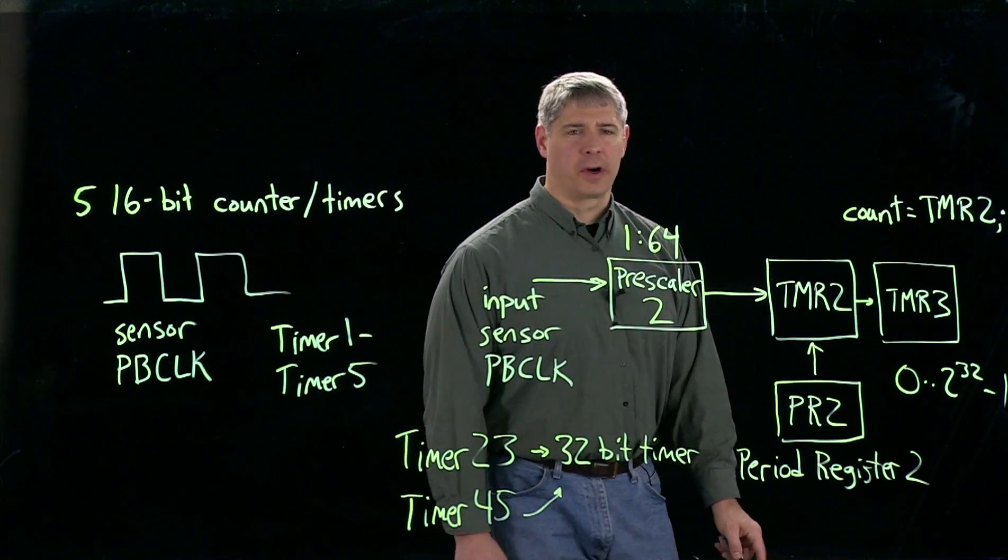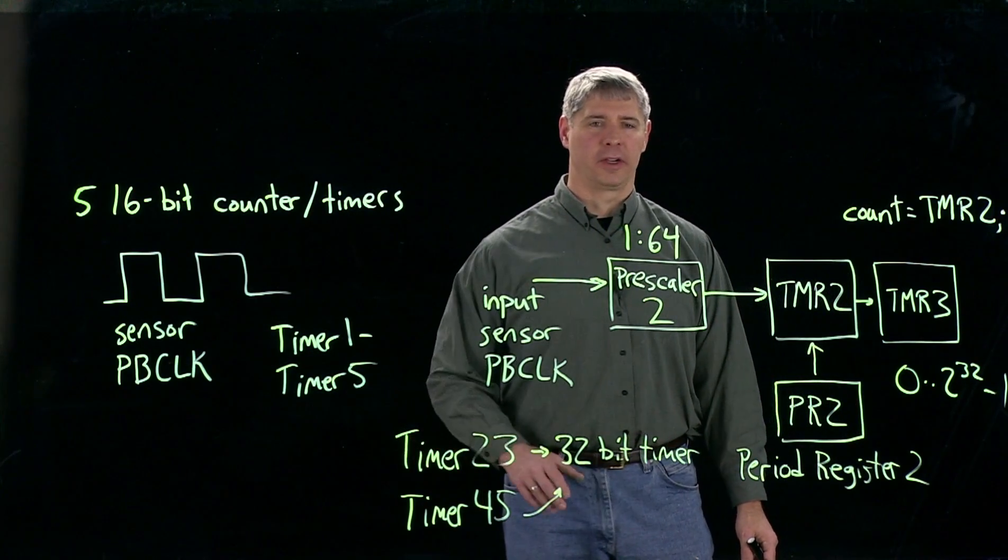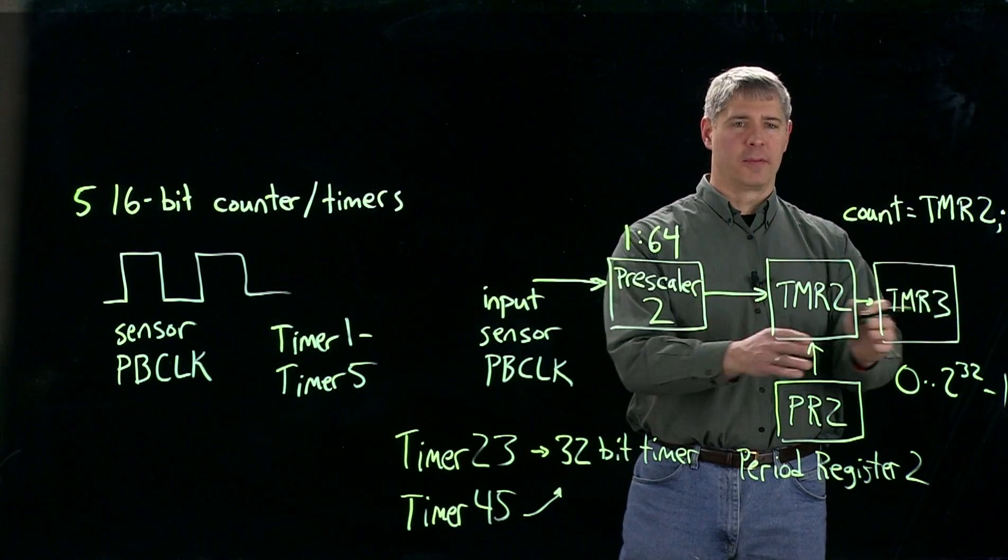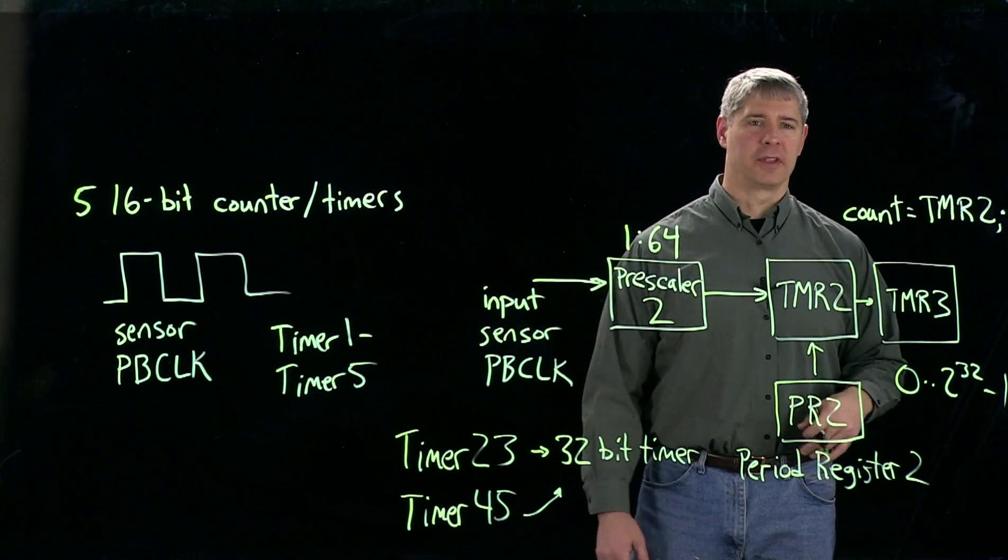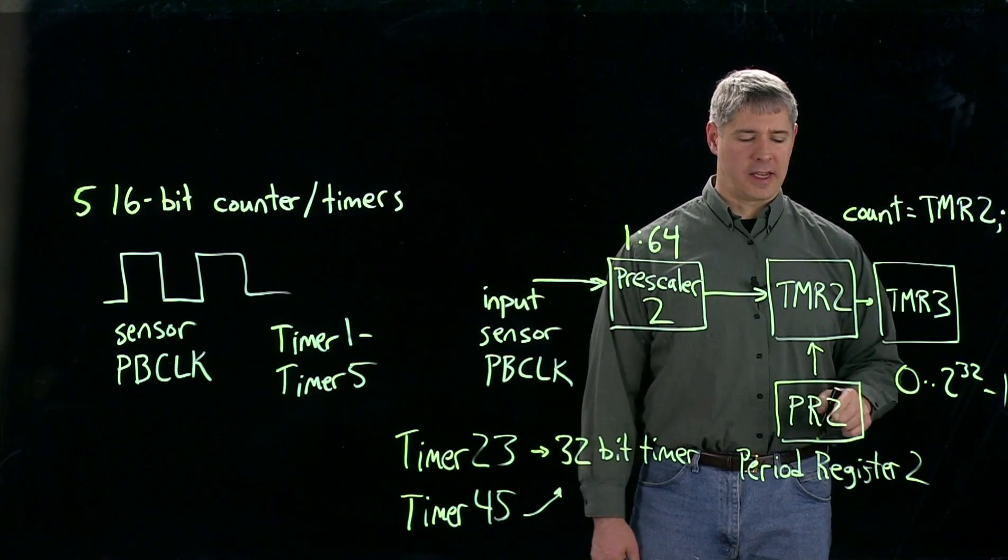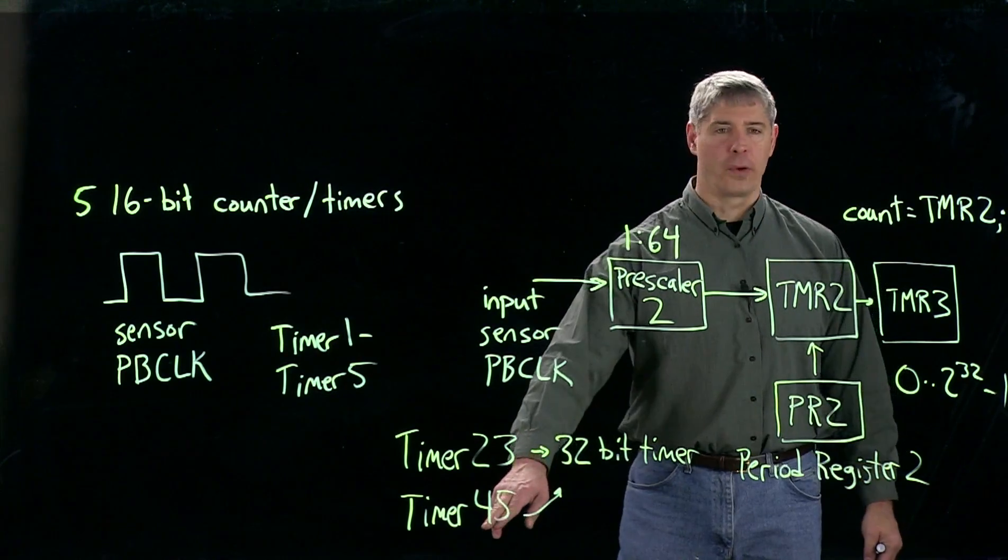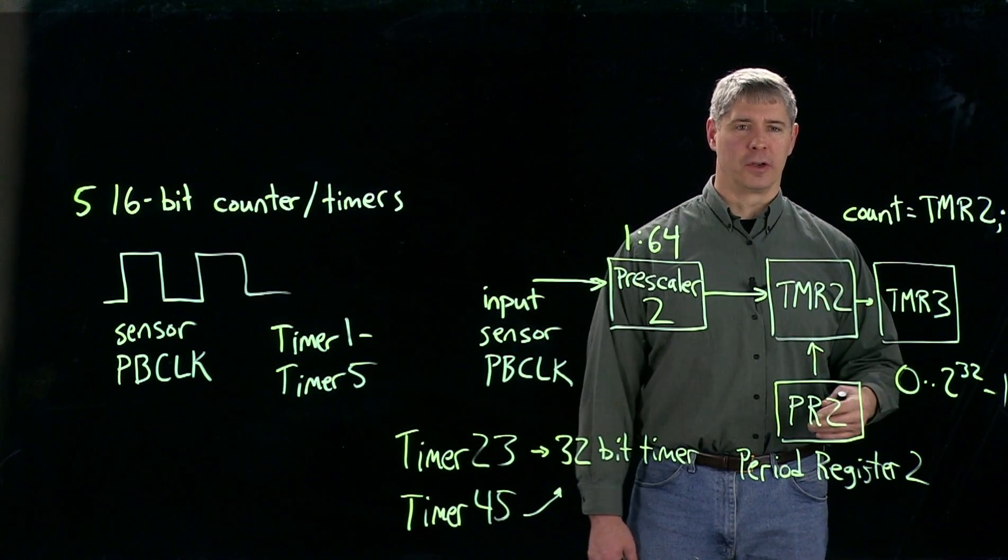Timer 1 can never be used as part of a 32-bit timer. But timer 2 and 3 can be chained to make a 32-bit timer. Timer 4 and 5 can be also. And so now this becomes one 32-bit counter or timer, not two separate 16-bit ones. And in this case, it's still the value of PR2 or PR4 in this case that determines when the entire 32-bit rolls over.